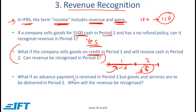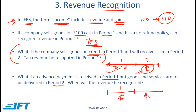What if an advance payment is received in period 1, but goods and services are to be delivered in period 2? In this case, we cannot recognize revenue in period 1 because the goods and services have not been delivered. It is only in period 2, when goods and services are delivered, that revenue can be recognized.